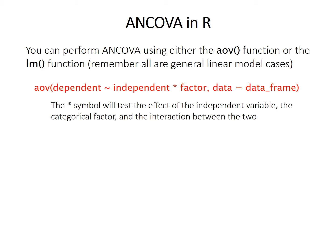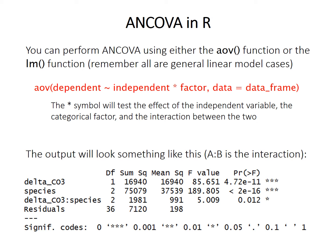The first step is to test the model that includes the interaction term, denoted in R with the multiplication symbol: the dependent variable column as a function of the independent variable column multiplied by the factor variable column, specifying the data frame. The output looks like ANOVA output but with extra lines. Focus on the interaction term — the one containing the colon, in this case 'delta_CO3:species'. Here the F statistic is 5.009 with 2 and 36 degrees of freedom and a p-value of 0.012, indicating a significant difference in slope among the three species categories.